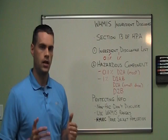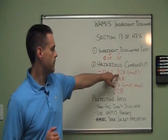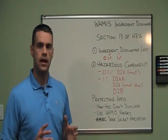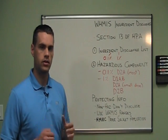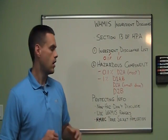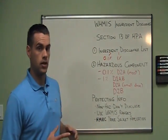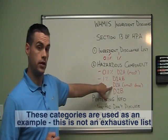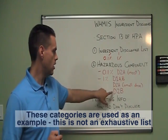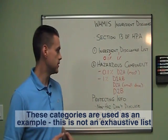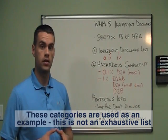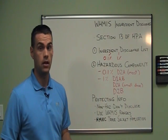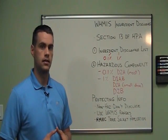You need the WHMIS classification for that component. Once you have it, you check whether it falls under most — but not all — D2A hazard categories. If it does, it has a disclosure limit of 0.1%. If it's not one of the D2A categories, but instead is D1A, D1B, the small dose category of D2A, or any of the D2Bs, then it's going to have a disclosure limit of 1%. If that ingredient is below 1% of your mixture, you do not need to disclose it.